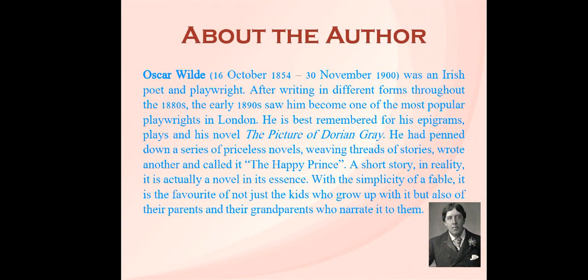Oscar Wilde was an Irish poet and playwright. After writing in different forms throughout the 1880s, the early 90s saw him become one of the most popular playwrights in London. He is best remembered for his epigram plays and his novel, The Picture of Dorian Gray. He penned down a series of priceless novels and wrote another called The Happy Prince — a short story.